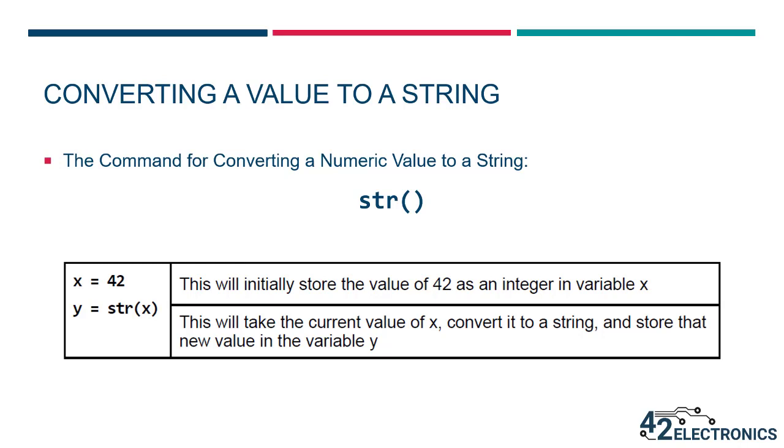On the top, you can see the command to convert a value to a string. It can be used just like the integer conversion command we just discussed and here are some examples. At the top of the table, you'll see the value 42 doesn't have any quotation marks around it, so Python will interpret this as an integer and store it as a value in the variable x. With the next command, Python will take the current value of x and convert it to a string and store that new value in the variable y.